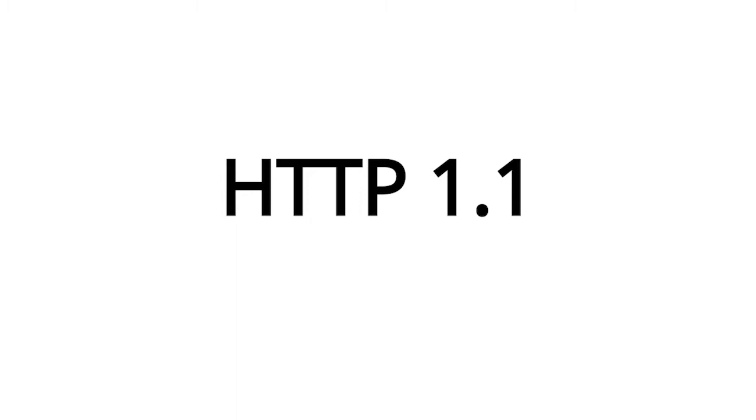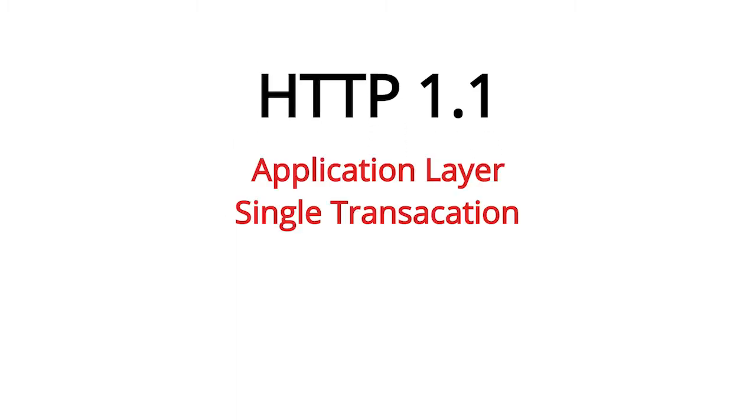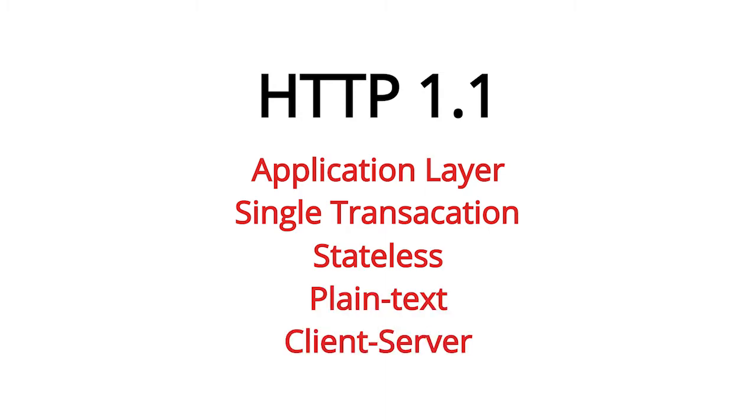HTTP 1.1 is an application layer, single transaction, stateless, plain text, client-server protocol. All this really means is that a client — like your Wicked device — opens up a connection to a TCP server inside of the cloud, and then it sends it an ASCII text request. The server then processes that request and replies with an ASCII text response, and then the connection is either left open or closed, depending on some configuration settings.